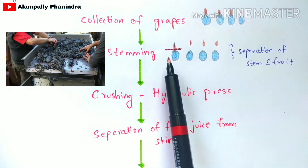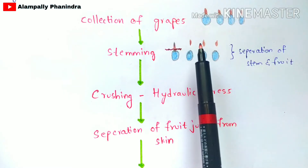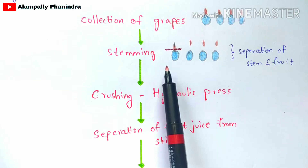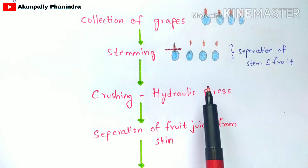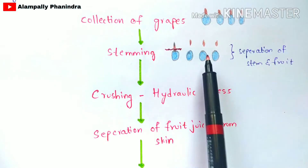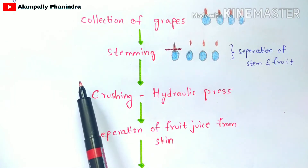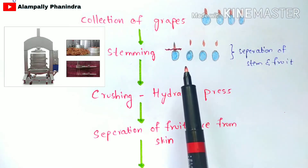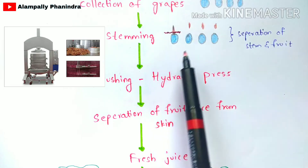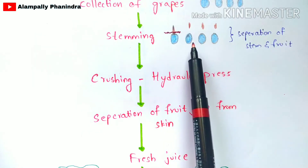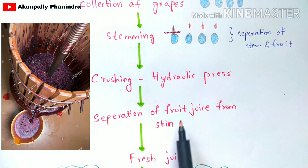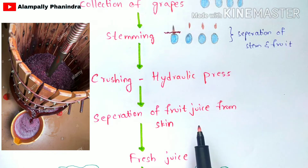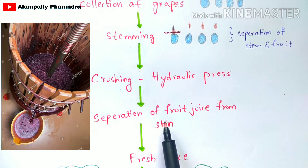After stemming, you take all of the fruits — the stem is discarded as it is no longer useful. Then you perform the process of crushing: all of the grapes are added into the hydraulic press, where crushing begins. The fruits get crushed and fruit juice is obtained along with the skin of the grapes. In the next step, the fruit juice is separated from the skin.